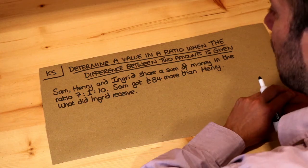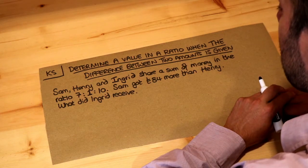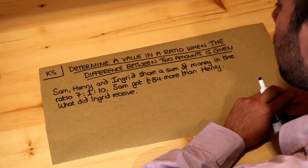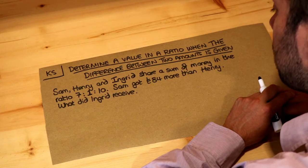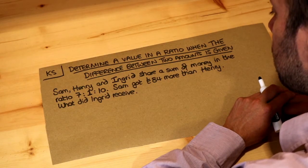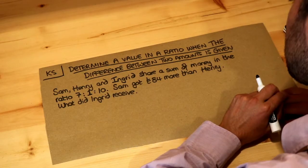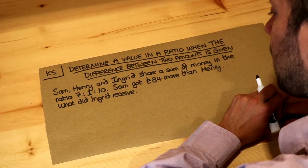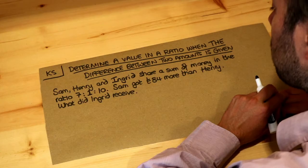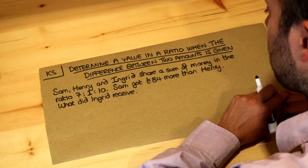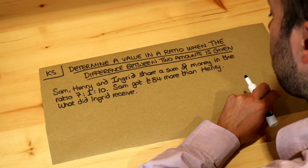Hello and welcome to this Dr. Rostomast's key skill video on determining a value in a ratio when the difference between two amounts is given. Here's a question: Sam, Henry and Ingrid share a sum of money in the ratio 7 to 1 to 10. Sam got £84 more than Henry. What did Ingrid receive?